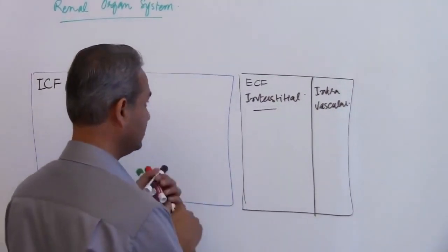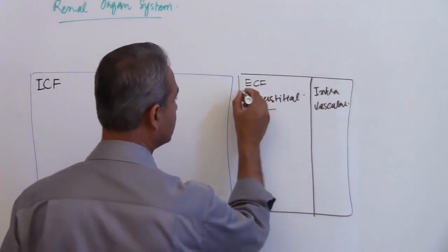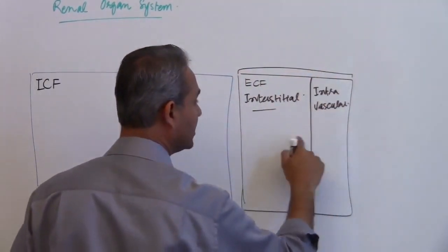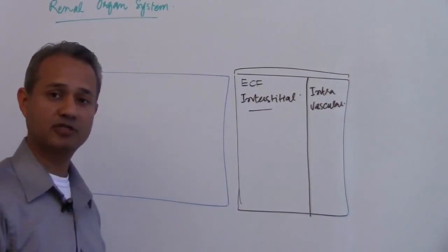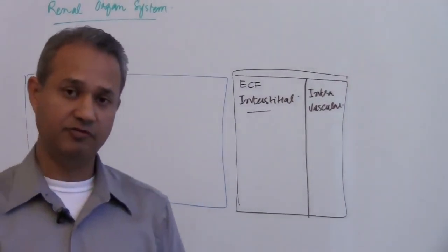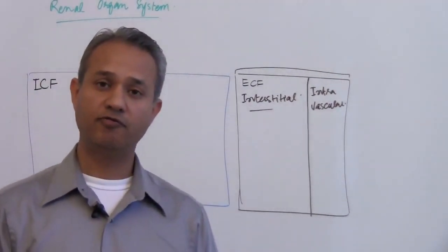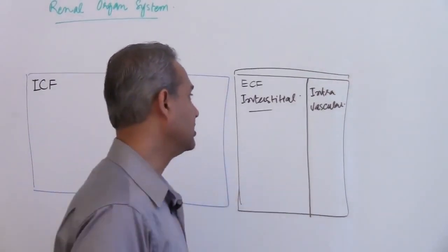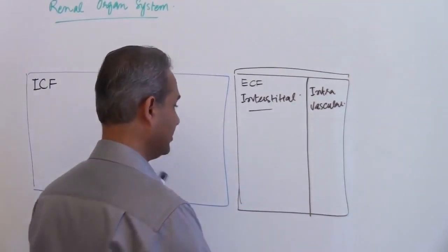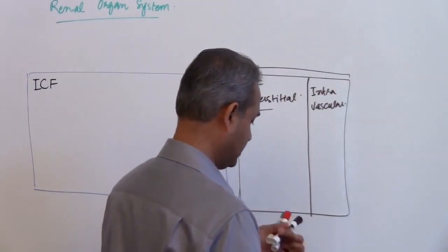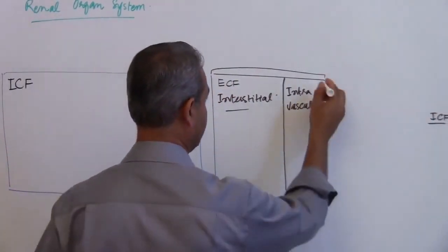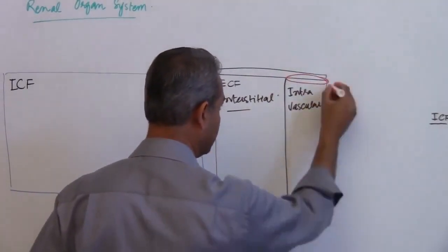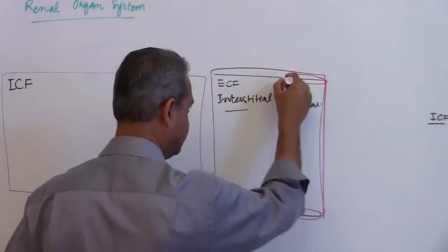As we just established, this whole compartment is extracellular, but within that we have two sub-compartments. So the question becomes, why do we have this further division? The reason is that the blood vessels, I can actually just go ahead and make this look like a blood vessel.